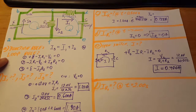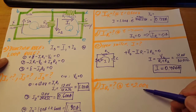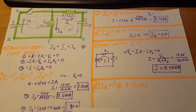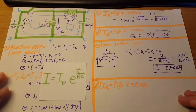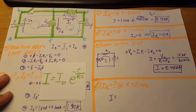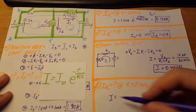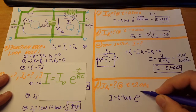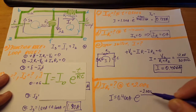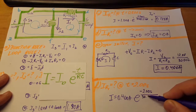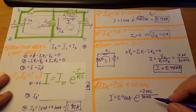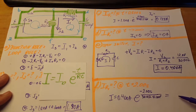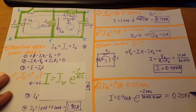The last part asks for the current through R1 two seconds after the switch was opened. We use the exponential decay equation again. i equals i0 times e to the negative t over RC, where i0 is 0.400 amps from part e, t is 2 seconds, R is 30 ohms (both resistors together), and C is 0.100 farads. This gives us i equals 0.205 amps.